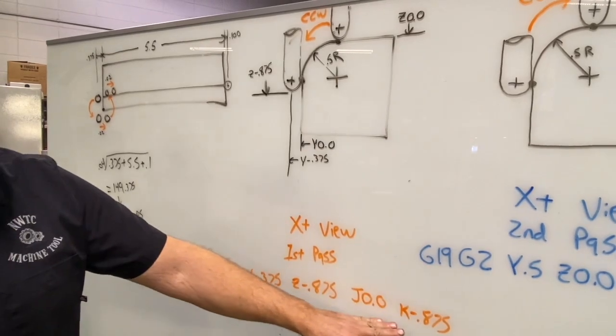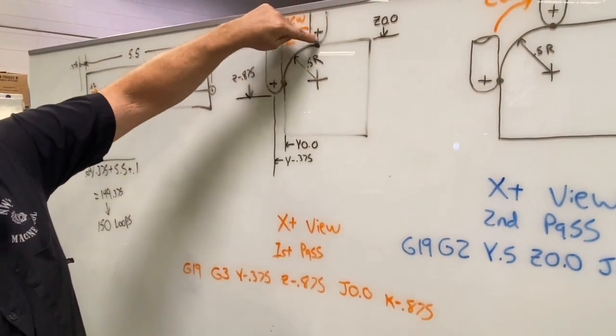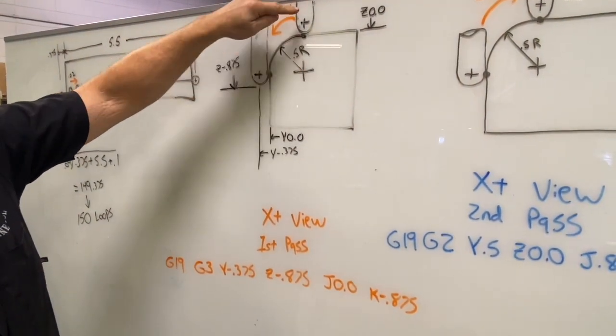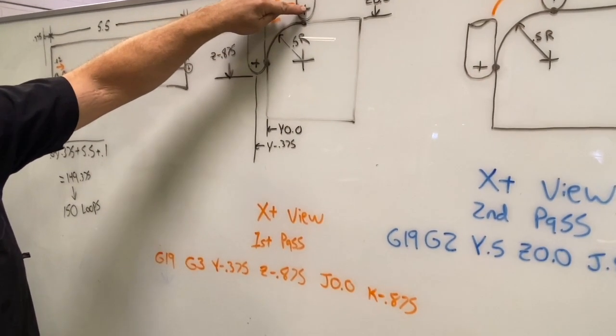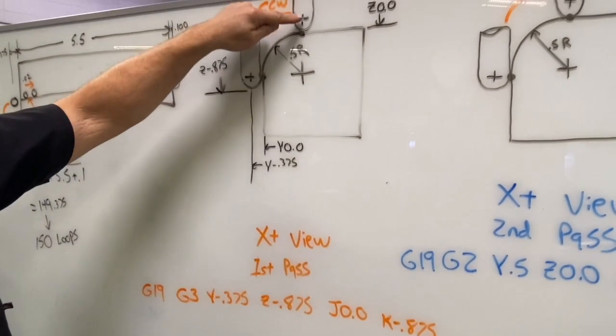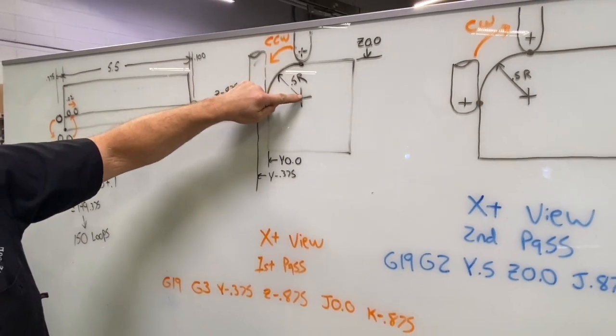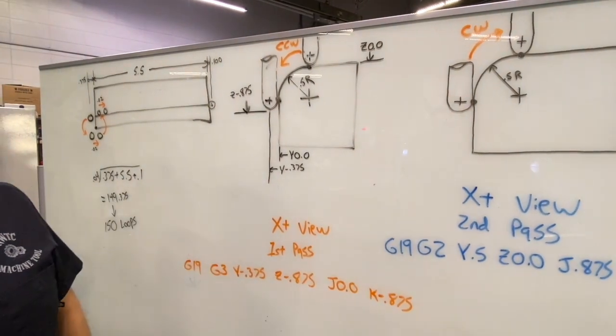And then of course we have our vectors. So our Y vector, which is our center line from the start of the arc, essentially that's zero distance and direction of zero. But now our Z vector, we're programming essentially to the center line of that ball, so the Z vector or K value, the direction is going negative direction into the part, the distance half inch plus the radius of our ball, negative .875.